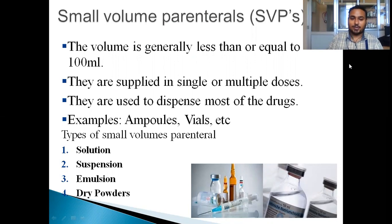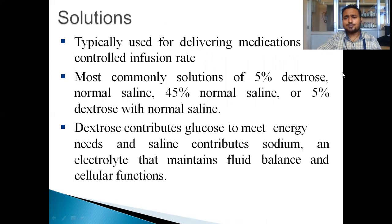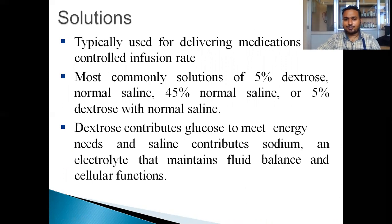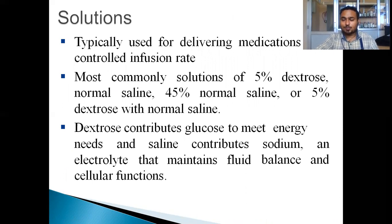The types of small volume parenterals include solutions, suspensions, emulsions, and dry powders. Solutions are typically used for delivering medications and to control infusion rate. The most common solutions are 5% dextrose, normal saline, 0.45% normal saline, and 5% dextrose in normal saline.